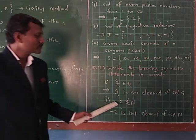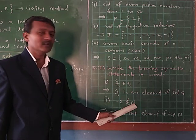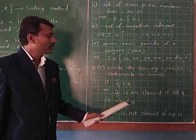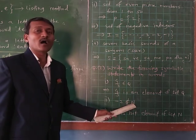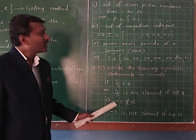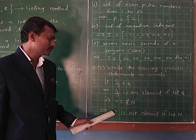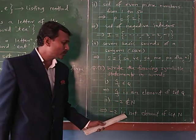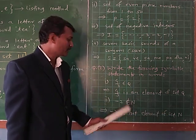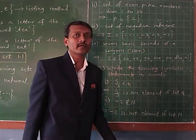Next example: -2 ∉ N, where N means natural number. Here, -2 is a negative number, and natural numbers are 1, 2, 3, 4... Therefore -2 does not belong to N. We have to write this as a verbal statement. The answer is: -2 is not an element of set N.